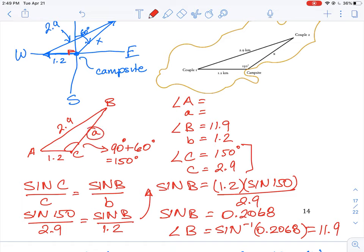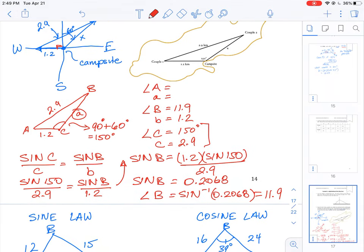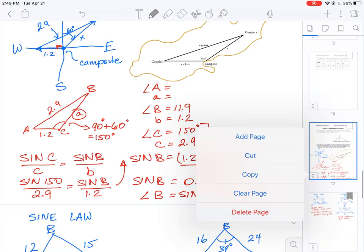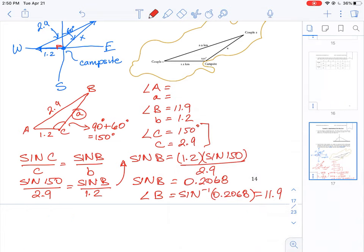But that doesn't tell us what the distance for A is, which is, remember, that is what we were really interested in finding. So we are going to have to go one step further on this question. Now, we know a couple things about a triangle. We also know that there's 180 degrees in it. So let me just add another page to this document here.